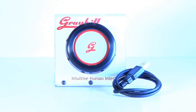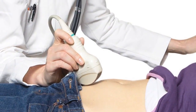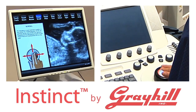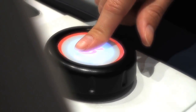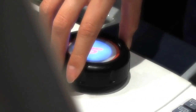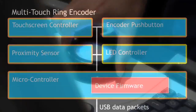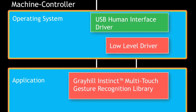Greyhill's Multi-Touch Ring Encoder, or MTRE, is currently being adopted by the medical electronics industry for imaging applications where it is problematic for the user to touch the high-resolution image. It features a 50mm diameter surface capable of tracking multiple touch positions. During normal operation, tracked touchpoint data is sent from the touch surface to the OEM system, where Instinct processes the data and handles the task of recognizing the gesture.